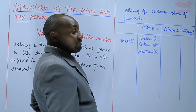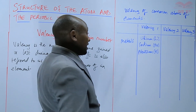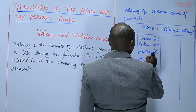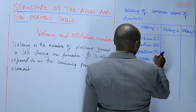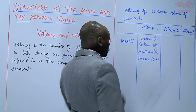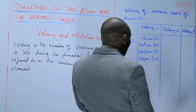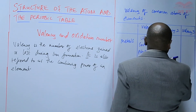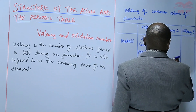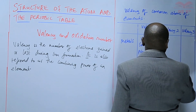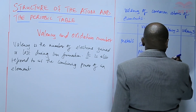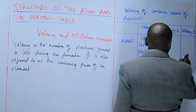There are also metals that have more than one valency, such as copper. Copper can have a valency of 1 or 2. So you have to specify: is it copper 1 or copper 2?